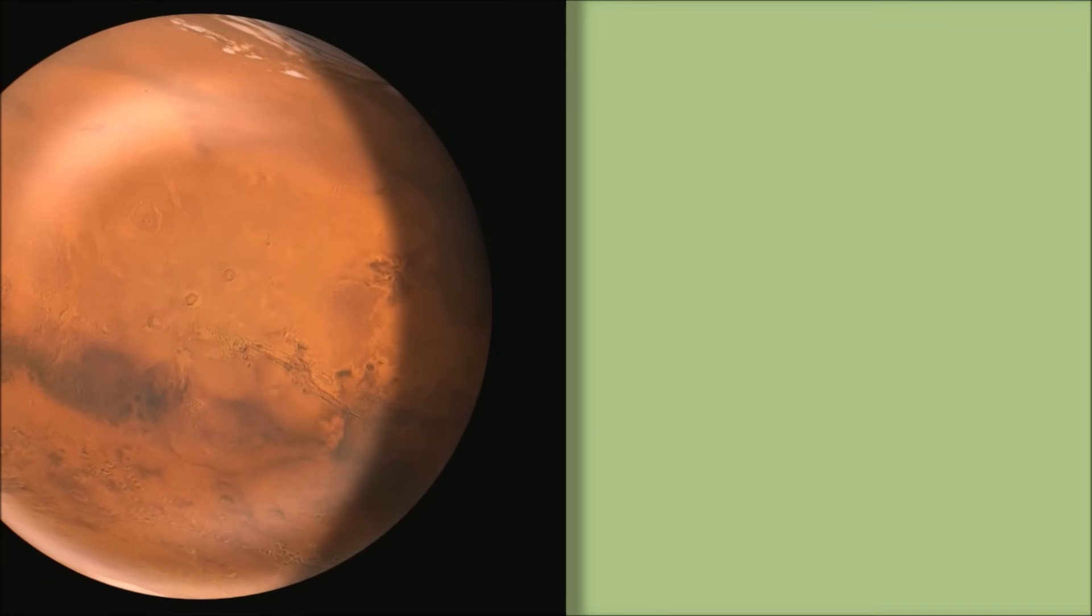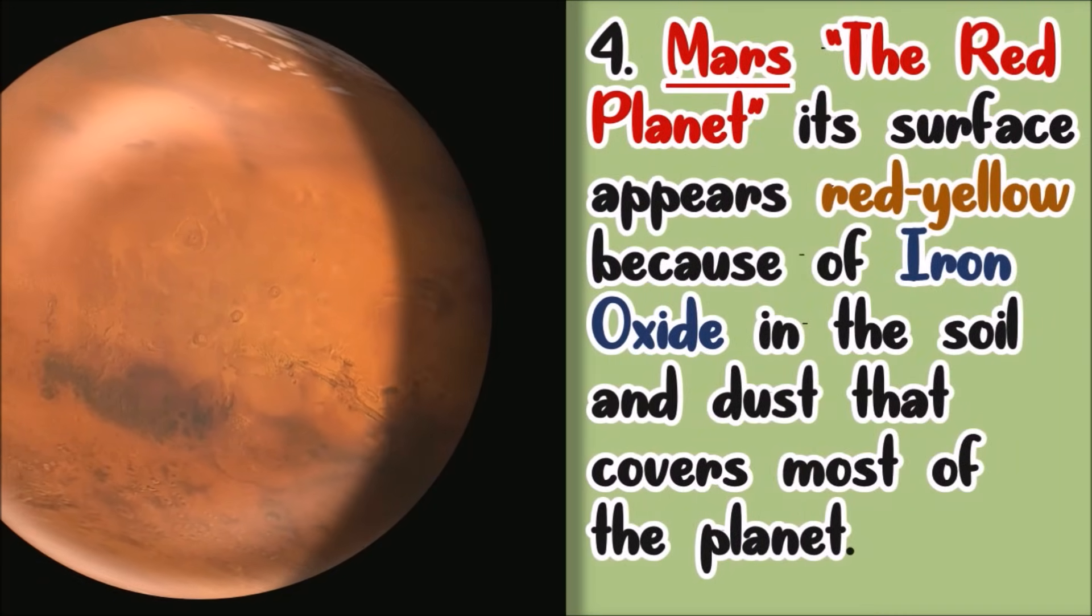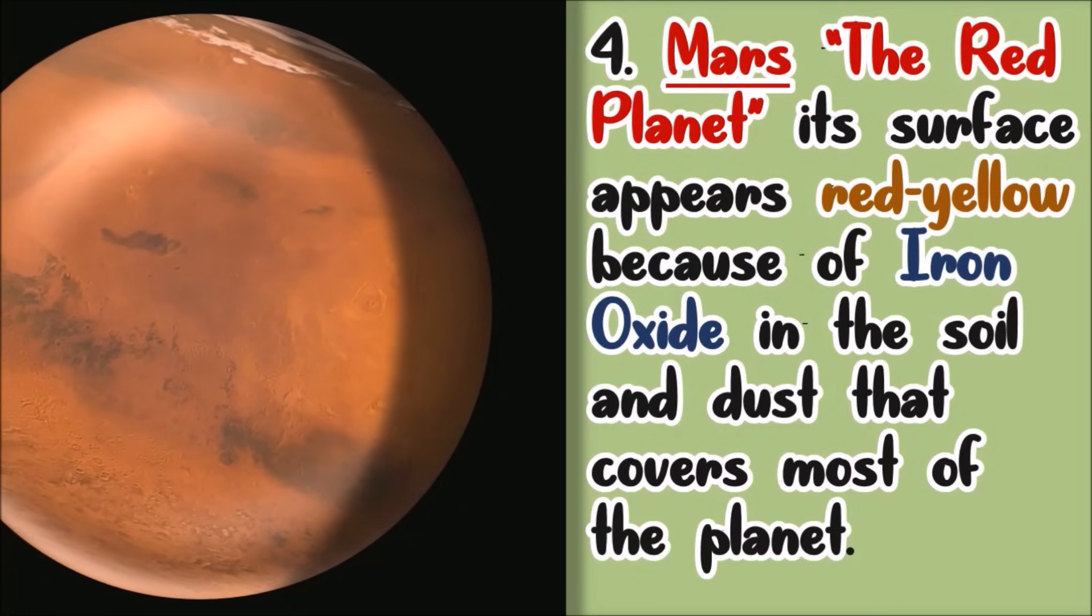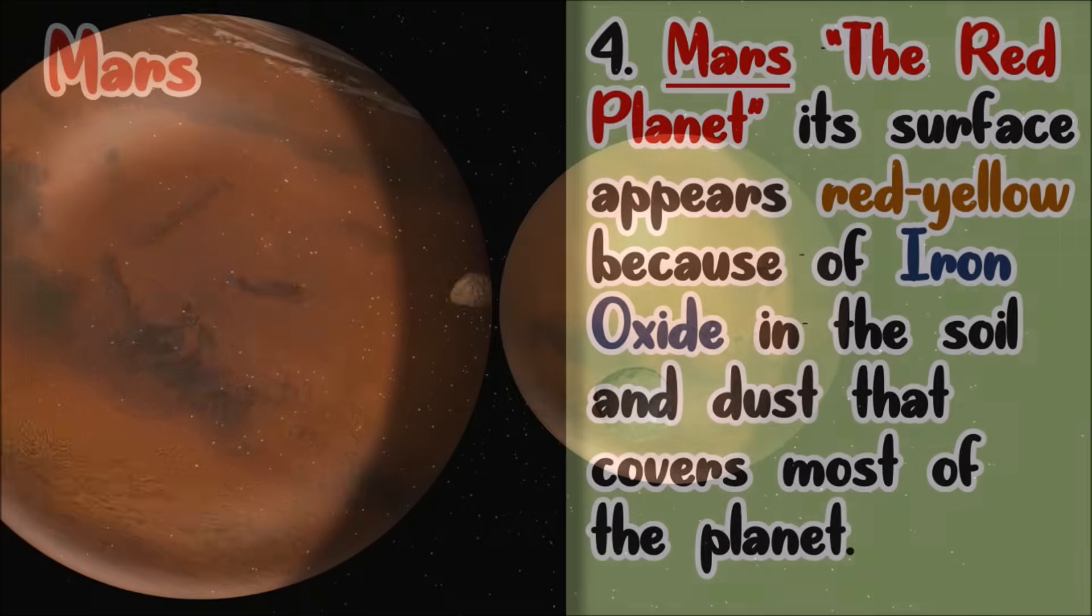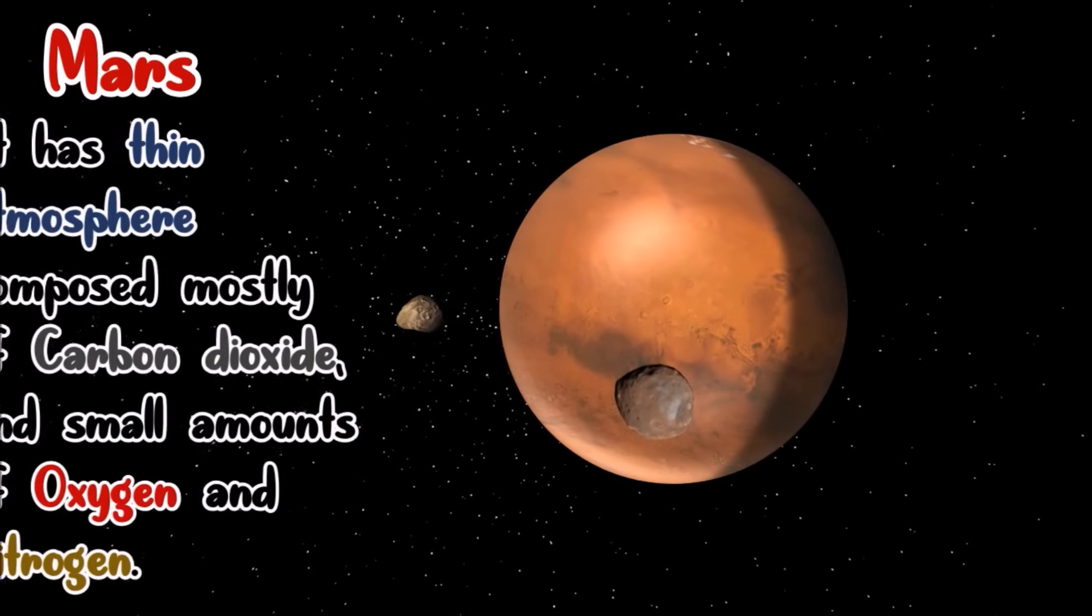Mars. Mars is known as the red planet. Its surface appears red-yellow because of iron oxide in the soil and dust that covers most of the planet. Mars has a thin atmosphere composed mostly of carbon dioxide, small amounts of oxygen, and nitrogen.